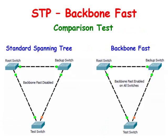Backbone Fast is a complementary technology to Uplink Fast. Whereas Uplink Fast is designed to quickly respond to failures on the links directly connected to the access layer switches, it does not help in the case of indirect failures in the core of the backbone. This is where Backbone Fast comes in.